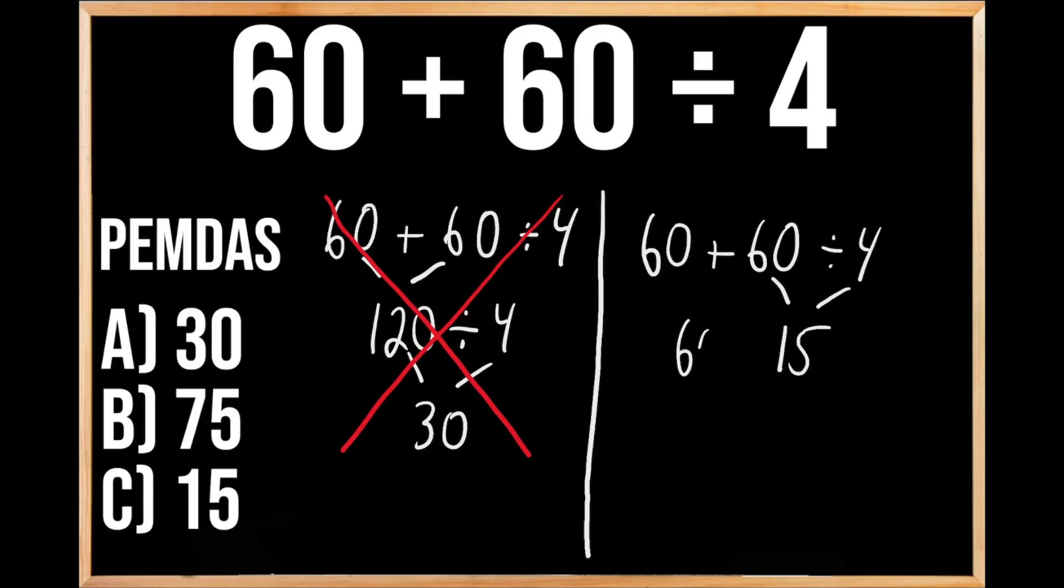So we have 60 plus 15. Well, clearly here we don't have any more multiplication or division, so we're going to move on to our last priority of adding or subtracting. So we're going to add 60 plus 15, which we know gives us 75, so our answer is B, 75.